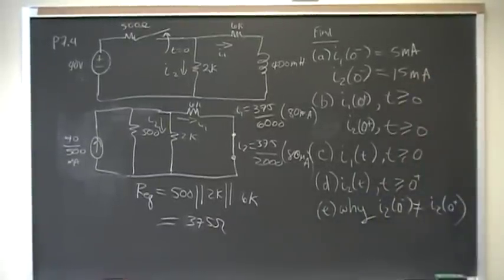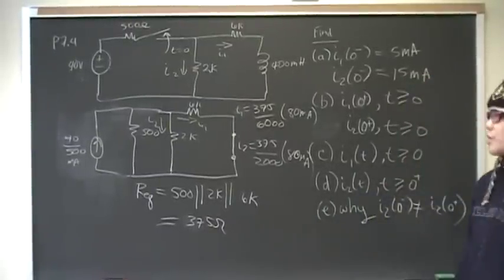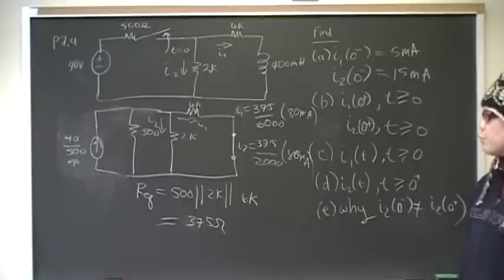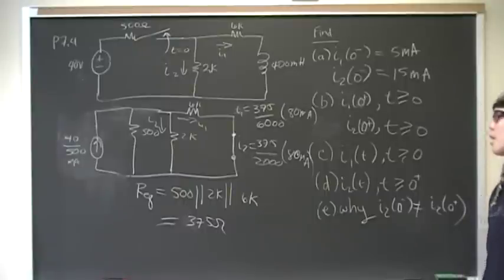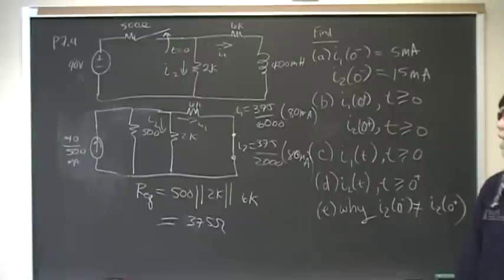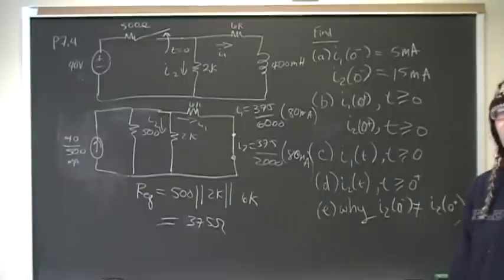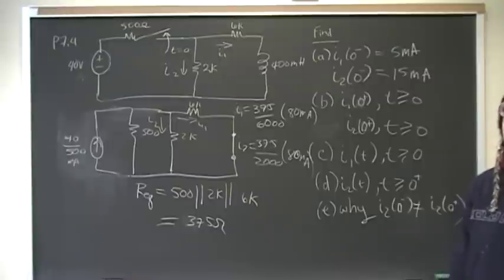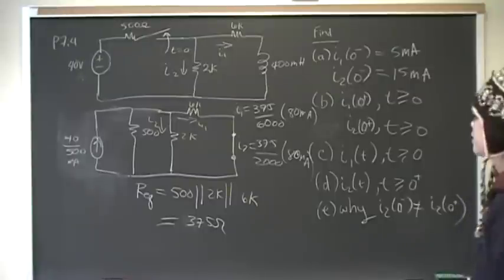At this level, if you're in chapter 7, you should know how to calculate branch currents, do current division, and find equivalent resistances, so I don't hold your hand through that. If you need more help with that, I'd refer you to look at some of the problems in chapters 3 and 4.